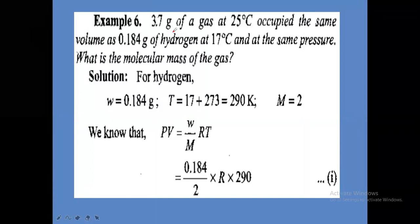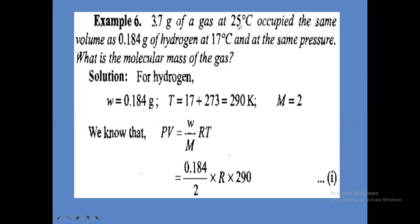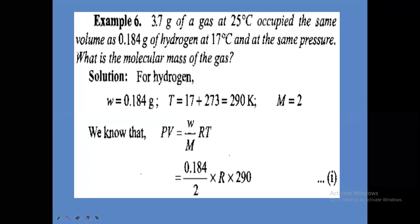Another example problem: 3.6 grams of a gas at 25 degree Celsius occupied the same volume as 0.184 grams of hydrogen at 17 degree Celsius, at the same pressure. The temperature was changed — initially 25 degree Celsius, finally 17 degree Celsius.